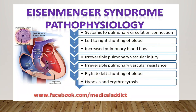In summary, acyanotic heart diseases covered include atrial septal defect, patent ductus arteriosus, ventricular septal defect, and mitral valve prolapse. Cyanotic (right-to-left shunt) diseases include tetralogy of Fallot and Eisenmenger syndrome. In the next class we will deal with other congenital heart lesions like coarctation of the aorta, Marfan syndrome, and primary pulmonary hypertension. Please subscribe and share with your friends.